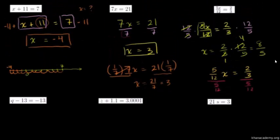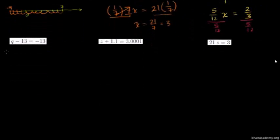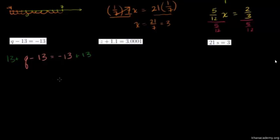Now let's solve some others — the variable isn't always x. We can solve for q, z, s, or anything. So we have q minus 13 is equal to negative 13. We want to isolate q. What if we add 13 to both sides? Adding 13 to negative 13 gives 0, so the left-hand side becomes just q. On the right-hand side, negative 13 plus 13 is 0. So our solution is q is equal to 0. We can check it: 0 minus 13 is indeed negative 13.